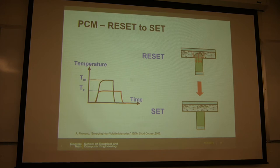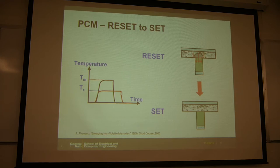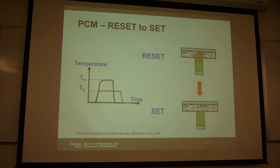If you want to switch the device from amorphous to crystalline — the set process — you apply a smaller amplitude current but for a longer time. This creates a temperature profile that helps the material recrystallize. So by tuning the amplitude and time scale of the current, you modulate the temperature profile to enable switching back and forth between crystalline and amorphous states.